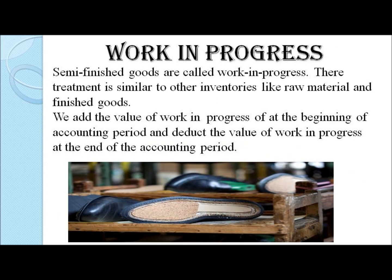Once we are done recording prime cost and factory overheads, we record work in progress in our manufacturing account. Work in progress means the stock of unfinished goods. Since manufacturing is a continuous process and not all goods are completed at the end of the financial period, we need to record the work in progress. For this reason, we add the opening value of work in progress and subtract the closing value of work in progress to find the total cost of production.